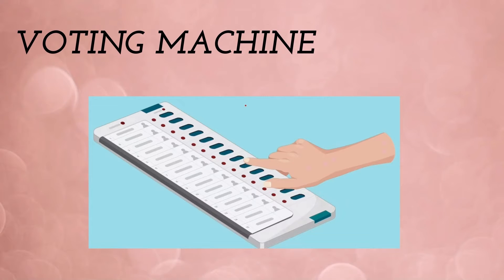Hello everyone, let us walk through the topic of a voting machine. A voting machine is an electronic device used for recording and tabulating votes in an election. It is designed to simplify the voting process and increase the accuracy of counting votes compared to traditional paper ballots. Voting machines can vary in design and technology and generally aim to provide a secure, efficient, and accessible means for voters to cast their ballots.